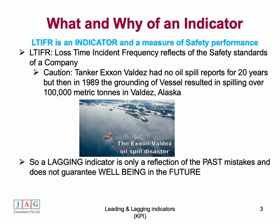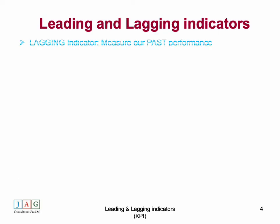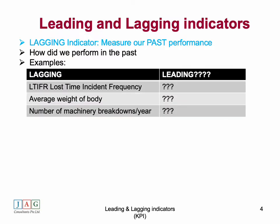An LTIFR close to zero doesn't really mean too much, because it talks about the past and doesn't necessarily tell us what's happening in the present. This is what is called a lagging indicator — it's only a reflection of past performance. In the last 20 years Exxon had no reported incidents, so the past looked wonderful, but that does not guarantee well-being in the future. Lagging indicators tell us how we have been in the past but do not guarantee future performance.